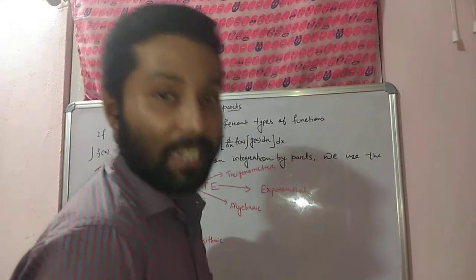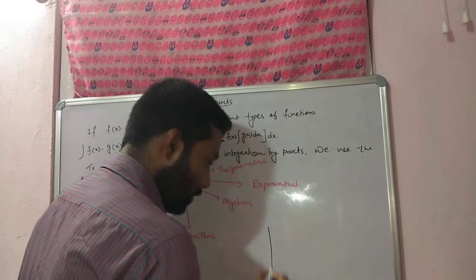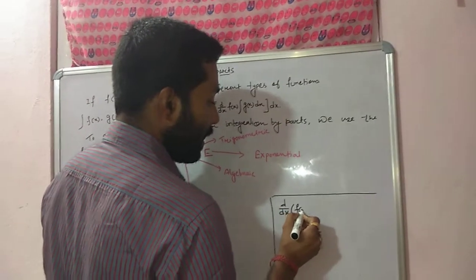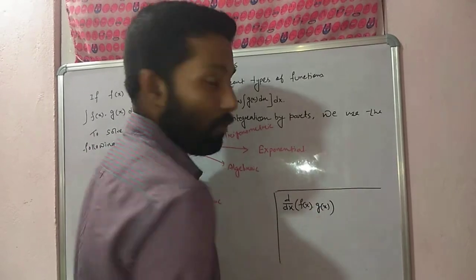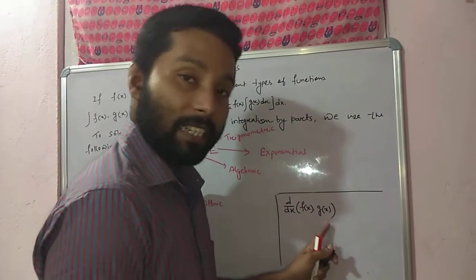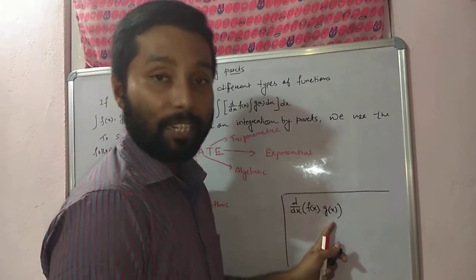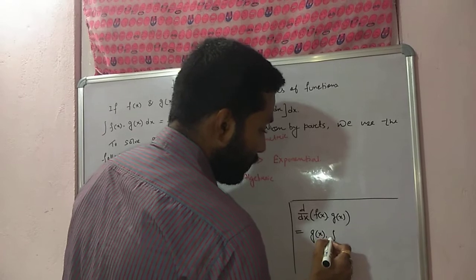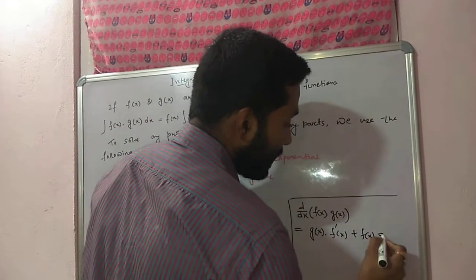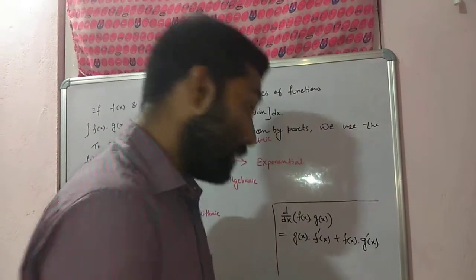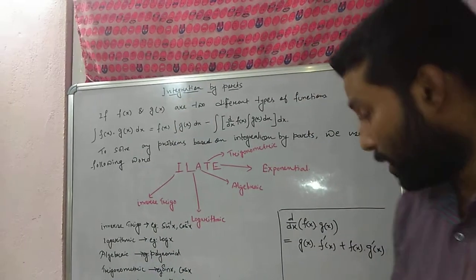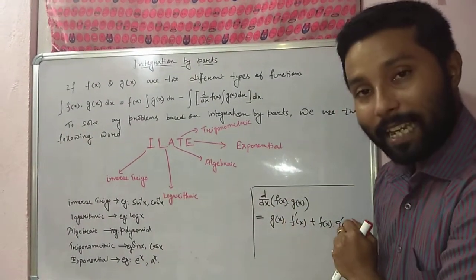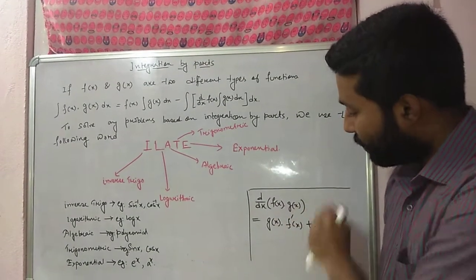For integration by parts, I want to recall differentiation. We all know the differentiation of f(x) into g(x) — that is the product rule. If f and g are two different functions, then differentiation of f(x) into g(x) with respect to x is equal to g(x) into f'(x) plus f(x) into g'(x). When we differentiate, we observe the first function and the second function.